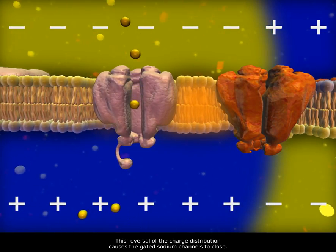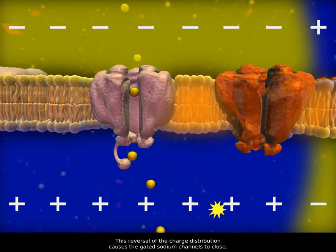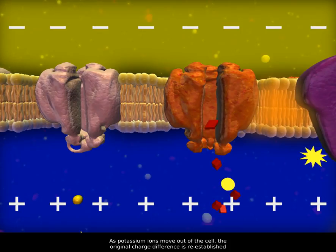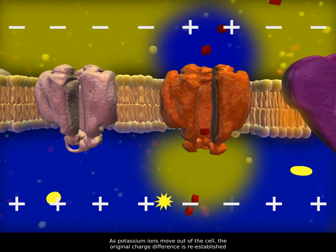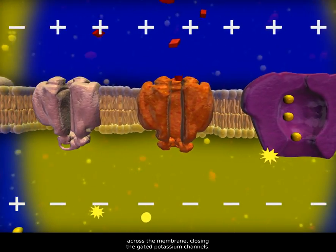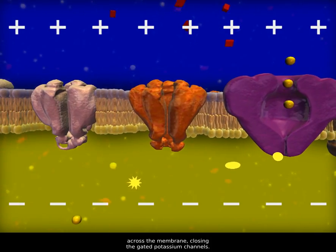This reversal of the charge distribution causes the gated sodium channels to close and the gated potassium channels to open. As potassium ions move out of the cell, the original charge difference is re-established across the membrane, closing the gated potassium channels.